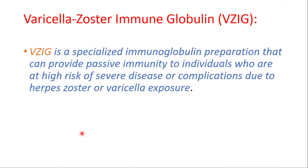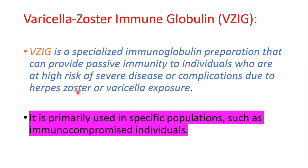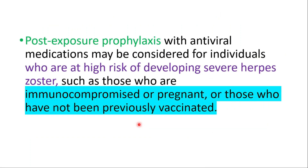Varicella-zoster immunoglobulin is a specialized preparation that can provide passive immunity to individuals at high risk of severe disease or complications due to herpes zoster or varicella exposure. It is primarily used in specific populations such as immunocompromised individuals. Post-exposure prophylaxis with antiviral medication may also be used in individuals at high risk of developing severe herpes zoster, such as those who are immunocompromised, pregnant, or previously unvaccinated.